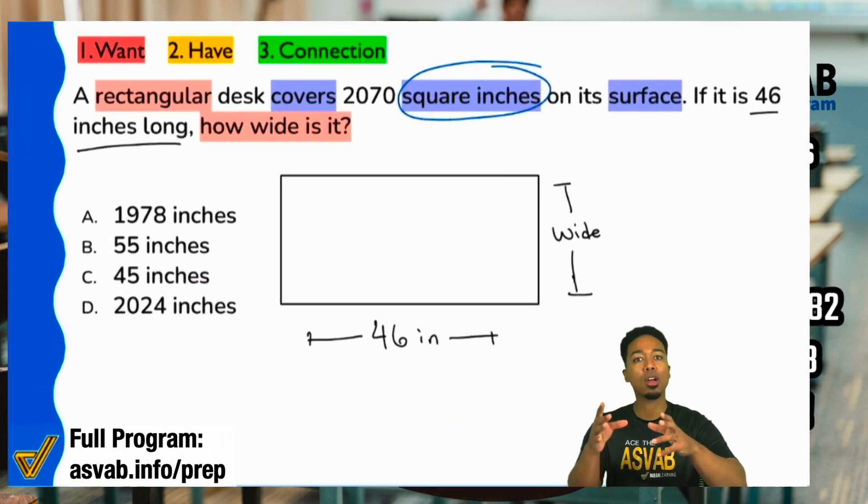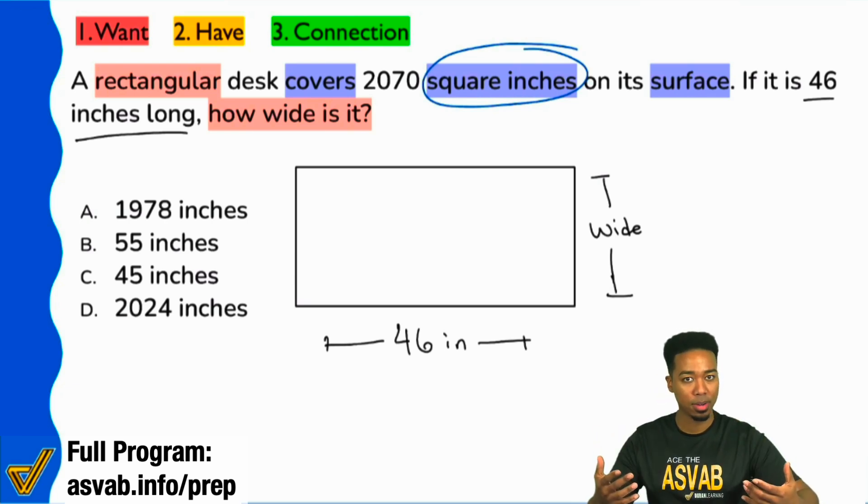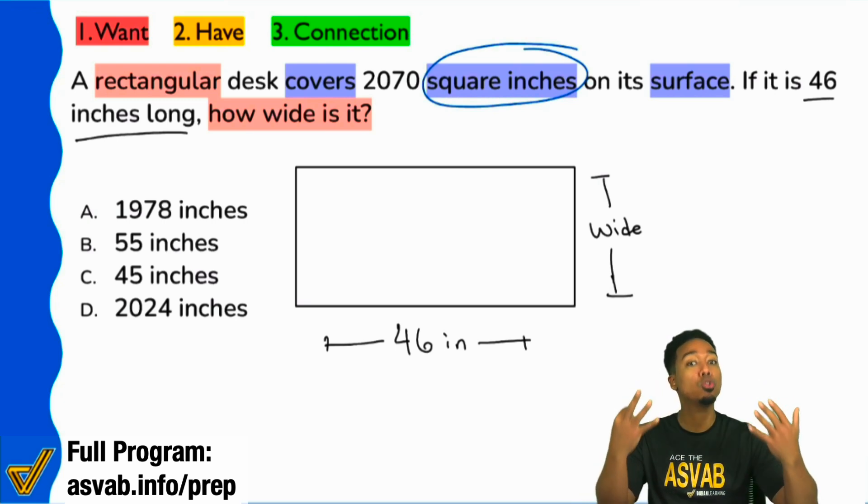Square inches, square feet, square meters, square centimeters. If there is a square before the unit, you are talking area. If you're talking volume, three dimensional, you'll say cubic units.